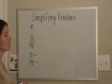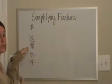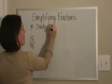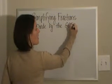Simplifying fractions. When you're given a fraction and you want to put it in simplest form or reduced form, you divide by the greatest common factor.